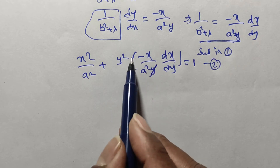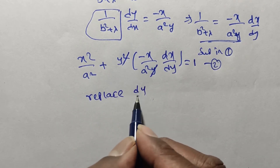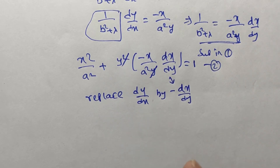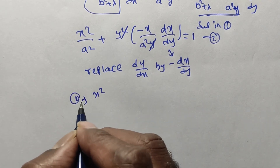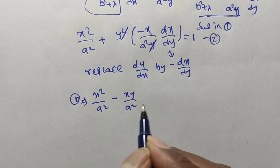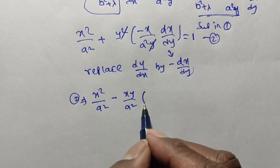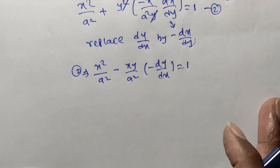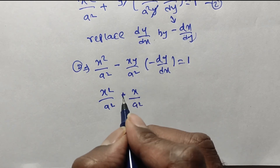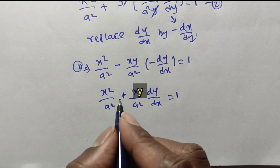To get the orthogonal trajectory, we replace dy/dx by −dx/dy. Here we have dx/dy, so we replace it with −dy/dx. Equation 2 becomes: x²/a² + x·y/a² · dy/dx = 1. Simplifying: minus times minus gives plus, so x²/a² + xy · dy/dx / a² = 1. This is a first-order, first-degree differential equation.